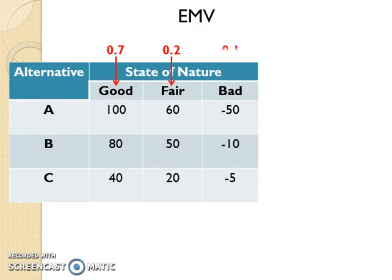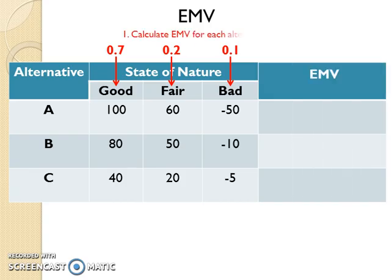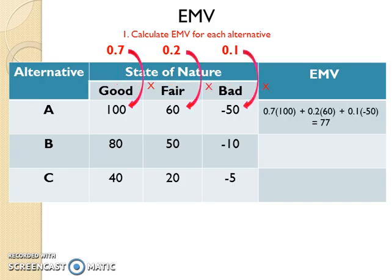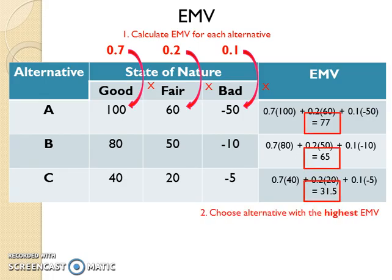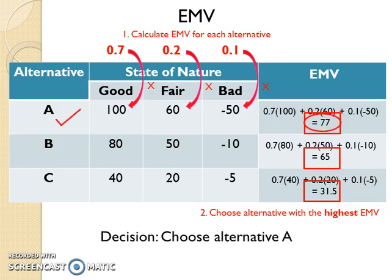Suppose the probability of good is 0.7, the probability of fair is 0.2, and the probability of bad is 0.1. To make a decision by using the EMV method, first add a column to the payoff table for EMV and then calculate the EMV for each alternative. EMV is calculated by taking the summation of the multiplication of the probability of each state of nature with the corresponding payoff. After the EMV for all alternatives has been calculated, identify the highest EMV. Here the highest EMV is 77, therefore the decision is to choose alternative A.